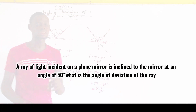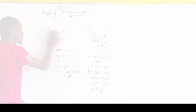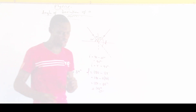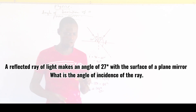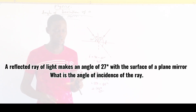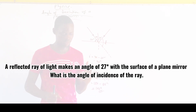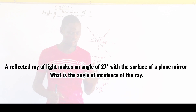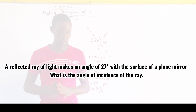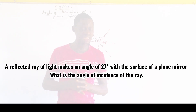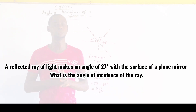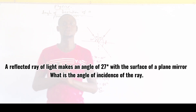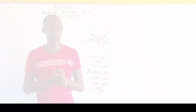Now here is the takeaway question for you to solve: A reflected ray of light makes an angle of 27 degrees with the surface of a plane mirror. What is the angle of incidence of the ray? If you know the answer, drop it in the comment section. Thank you for watching this video. Don't forget to subscribe.